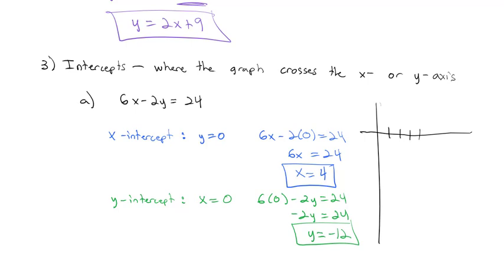We can use these intercepts to graph the line quickly — plotting the x-intercept at 4 and the y-intercept at negative 12, then connecting those two points to get a good picture of the graph.